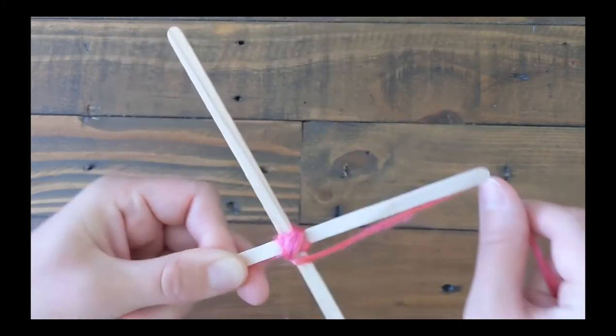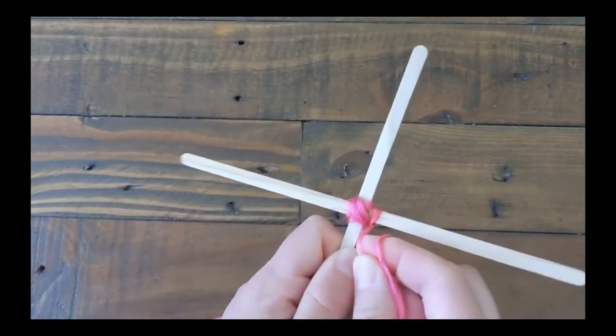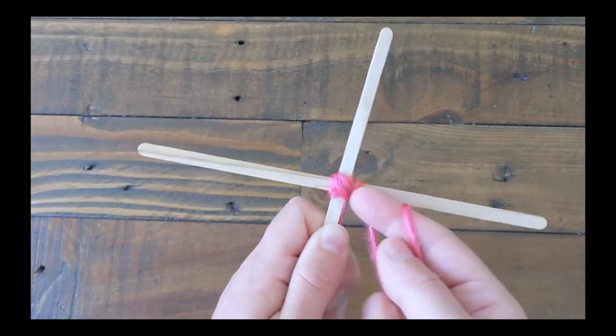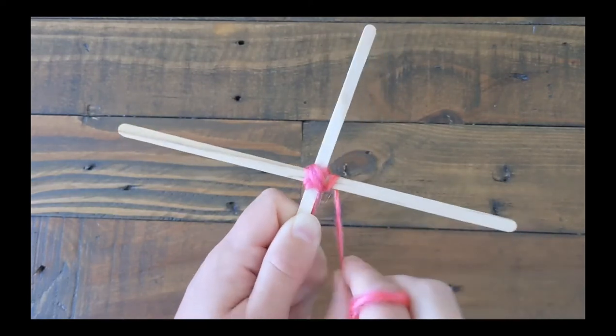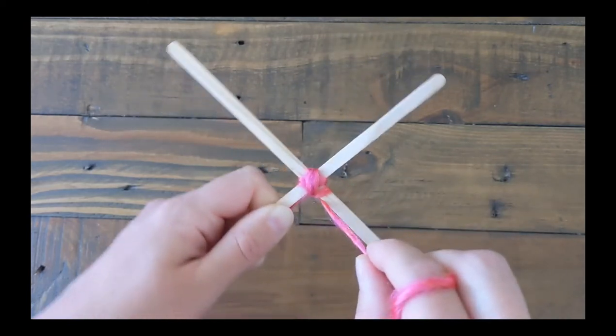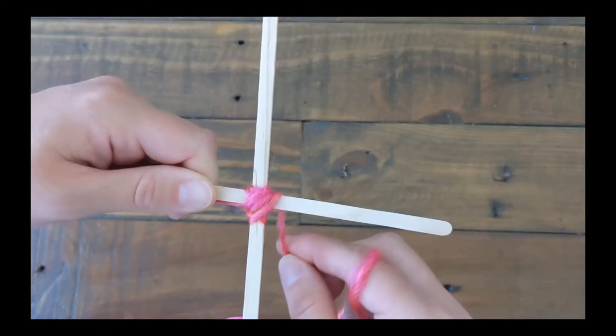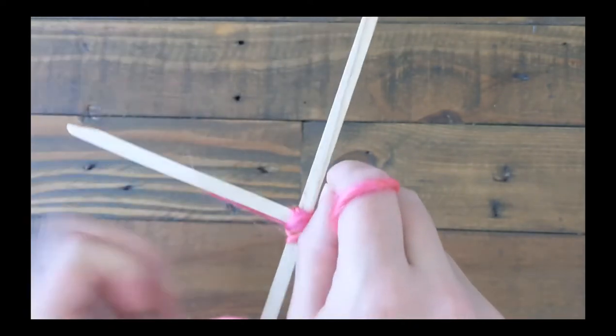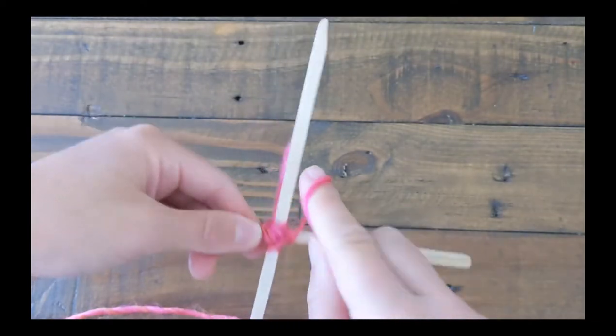So I'm going to start with this one. I'll wrap it around this stick once and try to pull it tight so that the yarn is close to the bit of yarn that's already there. So wrap it around once and then go over to the stick next to it and wrap around once. And then over to the next stick, wrap around once.